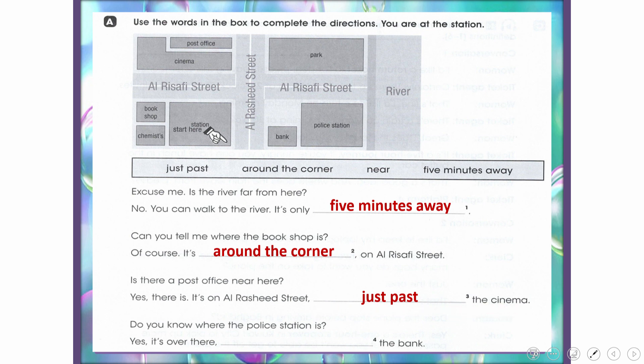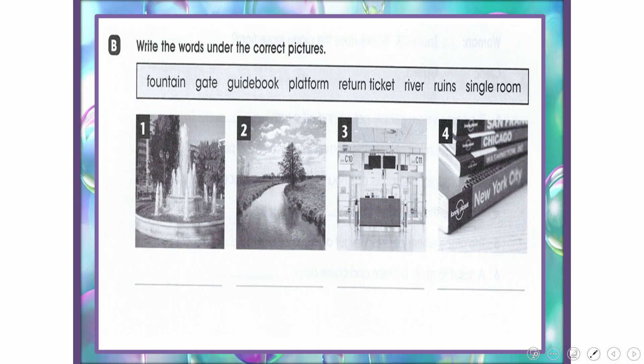'Just past the cinema' means opposite or beyond the cinema. Do you know where the police station is? Yes, it's over there near the bank. 'Near' means close to the bank.